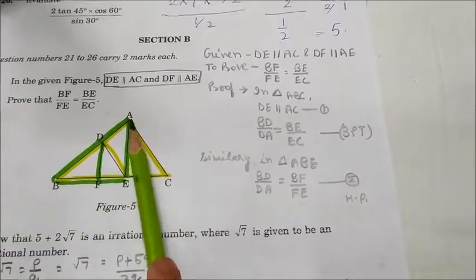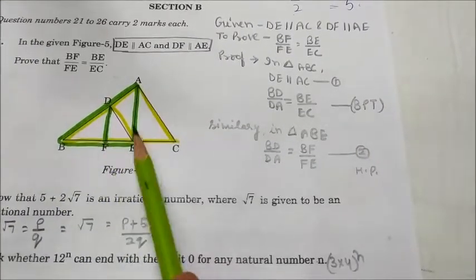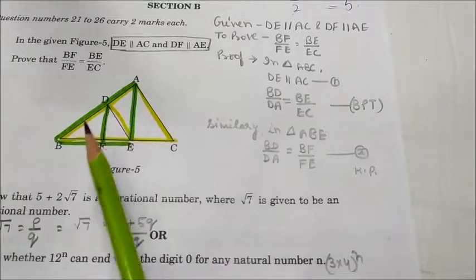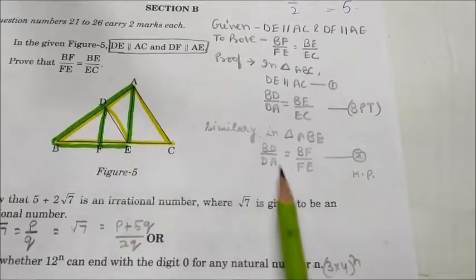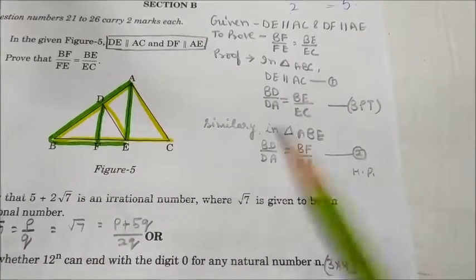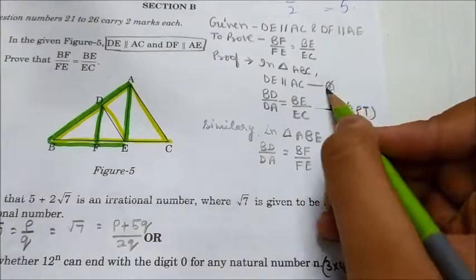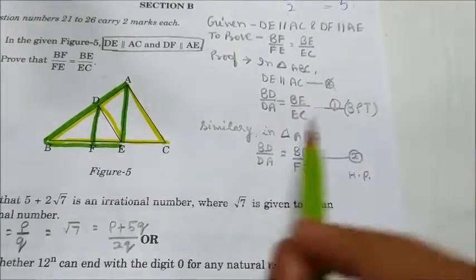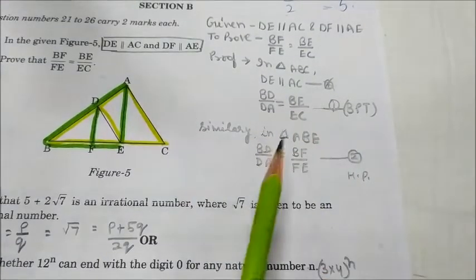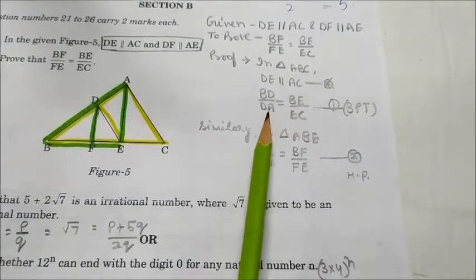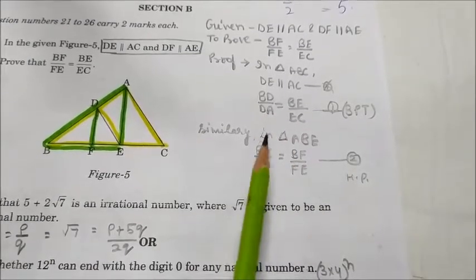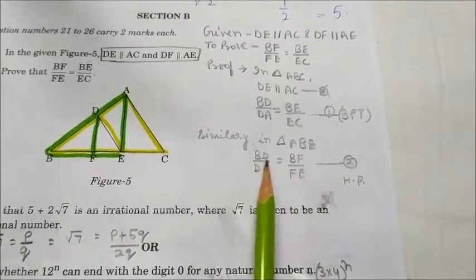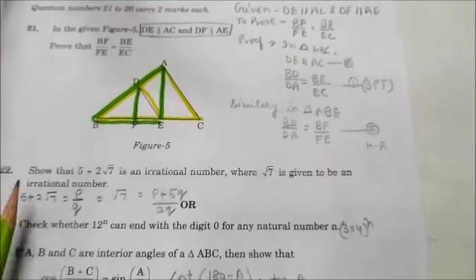In the second triangle ABE, by BPT theorem, since DF is parallel to AE, we get BD upon DA is equal to BF upon FE. We label this as Equation 2. Since the LHS of Equation 1 and Equation 2 are equal, the RHS must also be equal. Therefore BE upon EC is equal to BF upon FE. Hence proved.